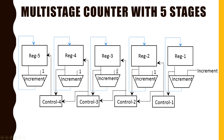Similarly, stage 3 increments its value when both stage 1 and stage 2 counters overflow, and this overflow is detected by control logic 2, and so on. Moreover, multistage counters can have non-uniform stages — for example, stage 1 can be a 5-bit counter, stage 2 can be a 10-bit counter, and stage 3 can be a 15-bit counter.